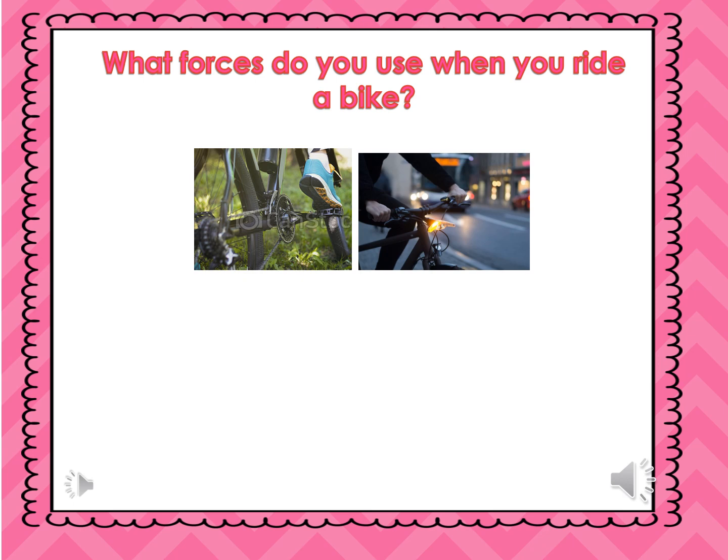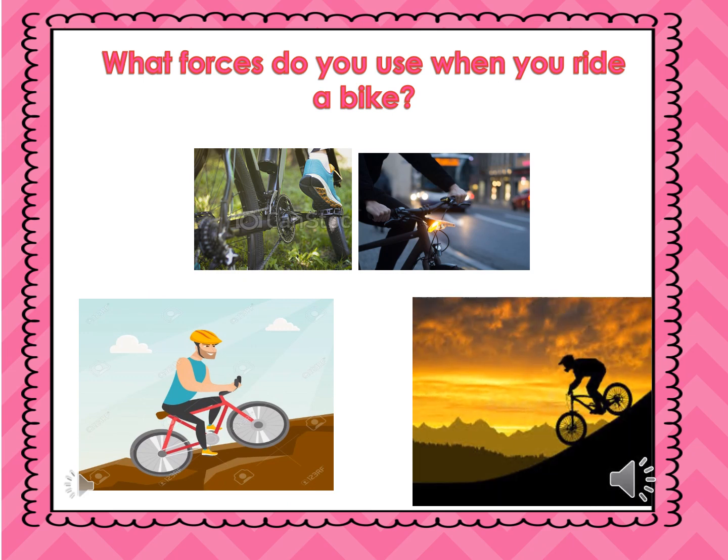Many forces can cause a bicycle to change its motion. What forces do you use when you ride a bike? Your legs push on the pedals, or you shift your weight and push the handlebars to turn left or right. Friction between the bicycle tires and the ground slows your motion. When the cyclist goes uphill, he has to pedal with more force. But when he goes downhill, he speeds up and has to use the brake to slow down. When he uses the brake, the wheels rub against the ground to slow down. As you move forward, the wind pushes against you in the opposite direction, but you keep pedaling to move forward.